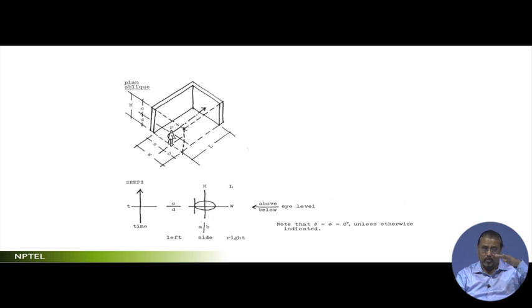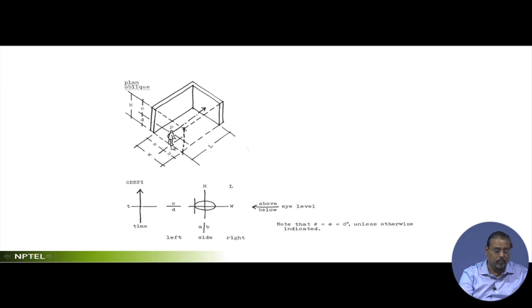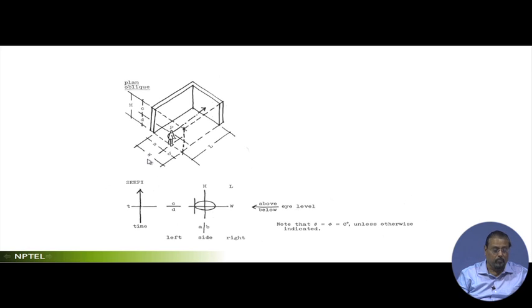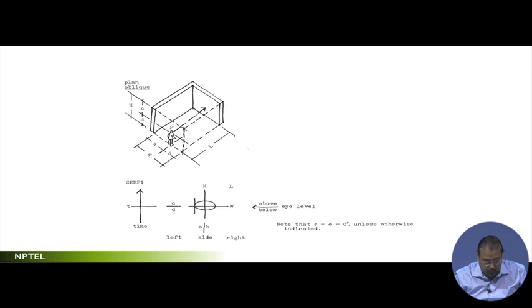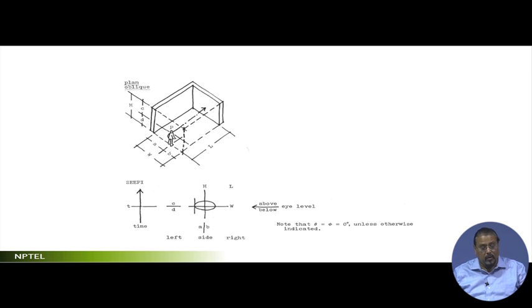H is the position of the overhead plane. Similarly, if you look from the sides, you are standing somewhere here and the next vertical plane on the left-hand side is at a distance of A, and the next vertical plane on the right-hand side is at a distance of B. Altogether A plus B makes the width of the space on which you are standing. When you are looking forward, L is the distance of the next vertical plane.